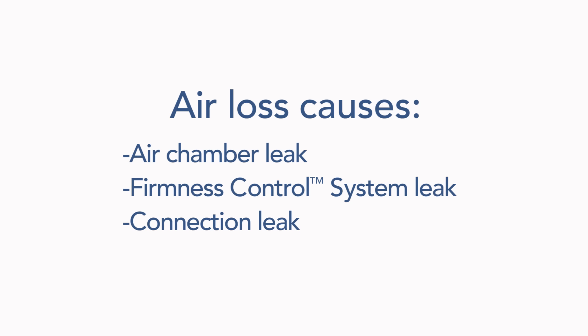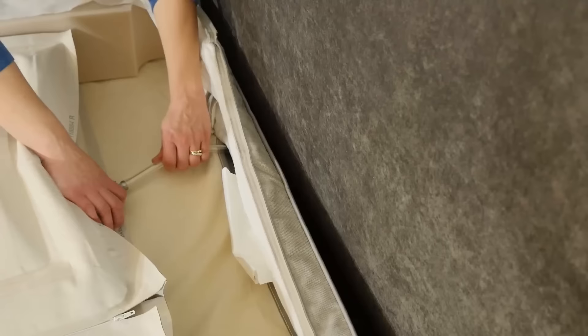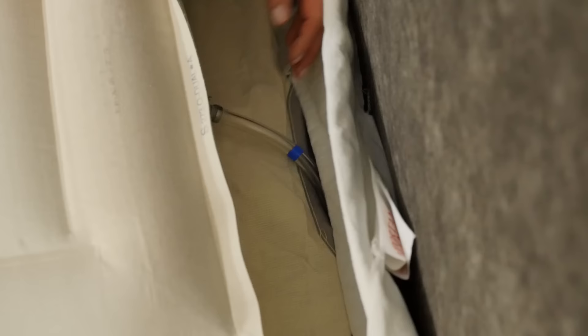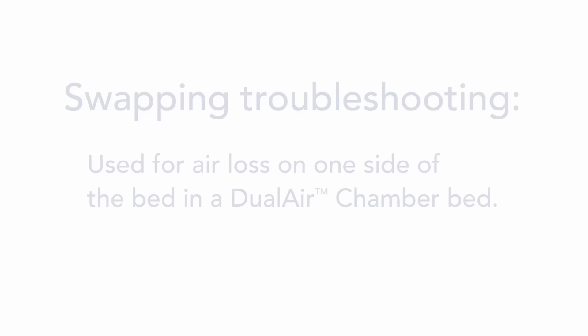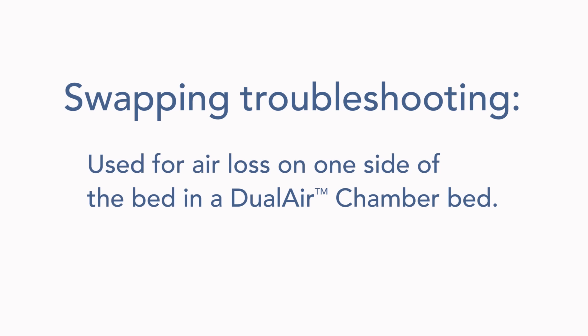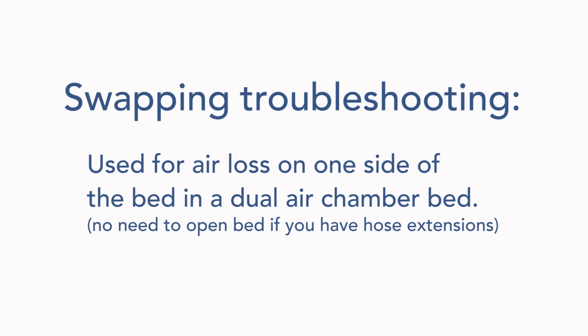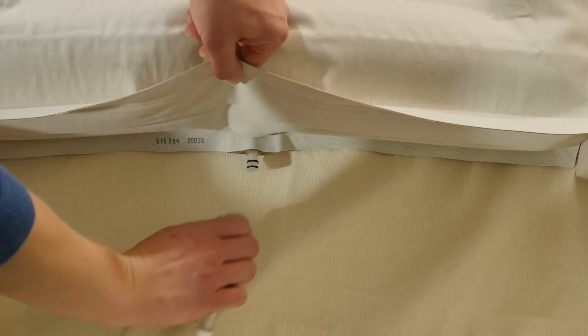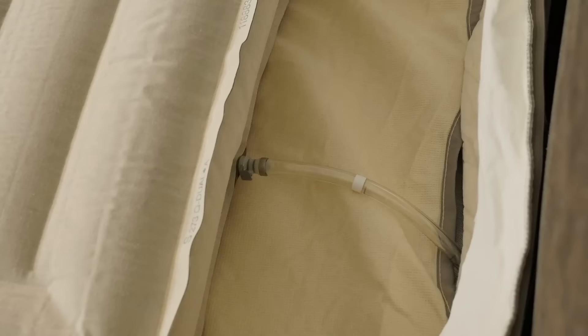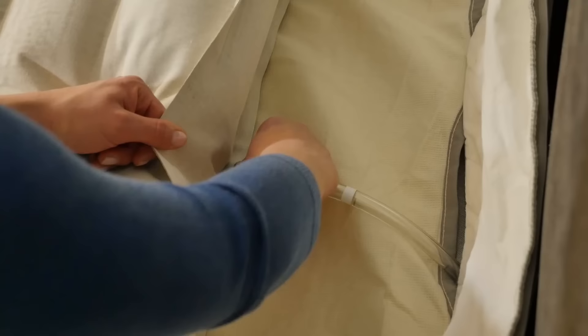Now we'll determine the source of air loss. First, verify the hose connection is secure by gently tugging on the hose. You will do swapping troubleshooting if you have a bed with two air chambers and are only experiencing air loss on one side of the bed. If you have hose extensions, you do not need to open the bed to perform swapping troubleshooting. Disconnect the hoses on each side of the bed by pushing in the gray tab while simultaneously pulling to remove.